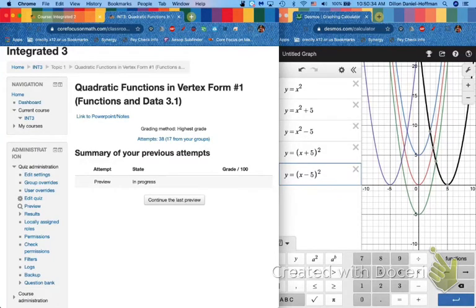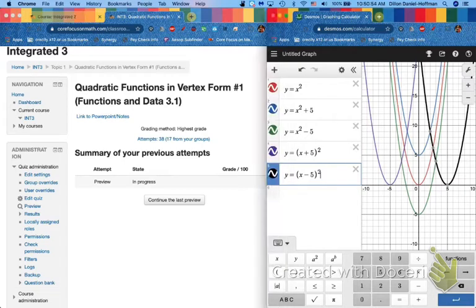Quadratic functions in vertex form number one. Check out what I have assembled on the right for all of you in my Desmos calculator. This is a colorful parabola filled utopia over here. Let's click over here so this red graph y equals x squared is your regular old parabola.